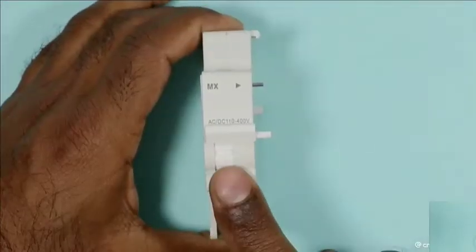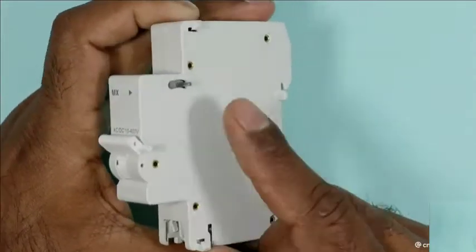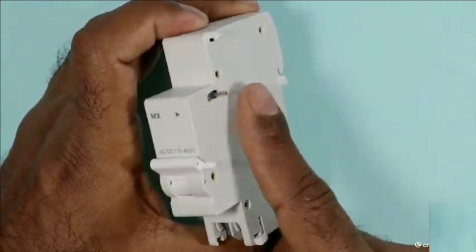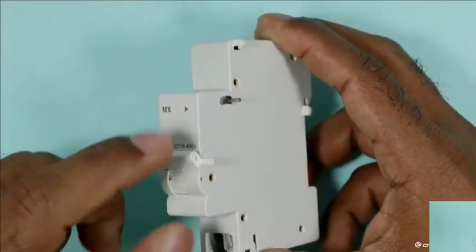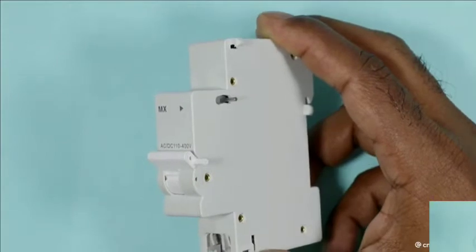When we want to trip this coil, then here a knob is present for mechanical interlocking. See this knob carefully. When I try to trip the coil, knob will go upwards. I am zooming in so that you can clearly see this.